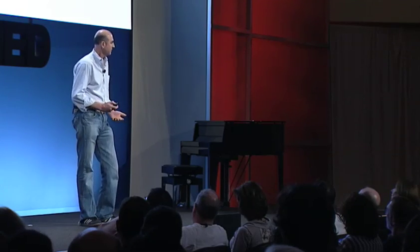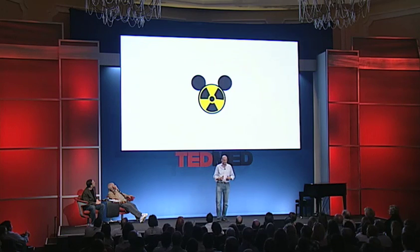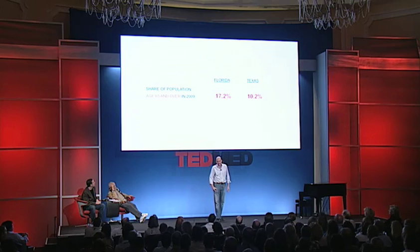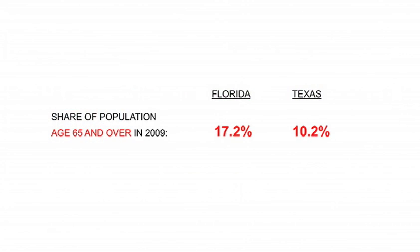There's an obvious answer. The population of people 65 and older in Florida is 17.2% as of 2009, compared with very young Texas — they're like different countries. How on earth could we possibly compare these two? Because here we have the fundamental chart: risk by age.